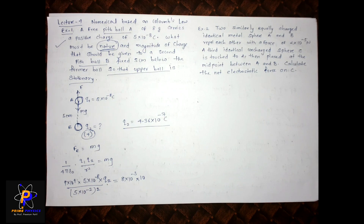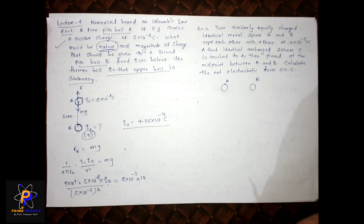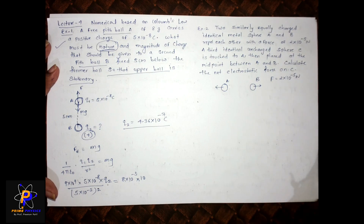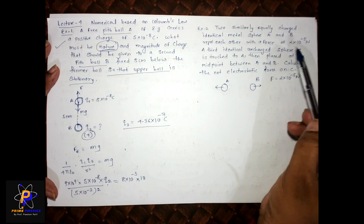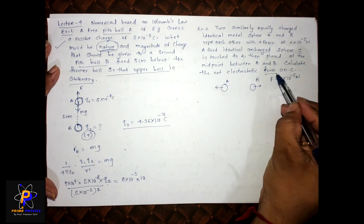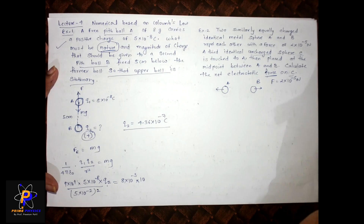Next sum: Two similarly charged identical metal spheres A and B repel each other with a force of 2×10⁻⁵ newtons. There are two balls A and B, and both are repelling each other with force 2×10⁻⁵ N. A third uncharged sphere C is touched with sphere A and then placed at the midpoint between A and B. Find the net force acting on C.